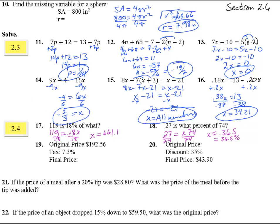Number 19. The original price was 192.56. And the tax is 7.3%. So we're going to take that original price and we're going to add to it, because this is a tax, 0.073 of the 192.56. And we put that into our calculators, punch that through, and we get 206.62.